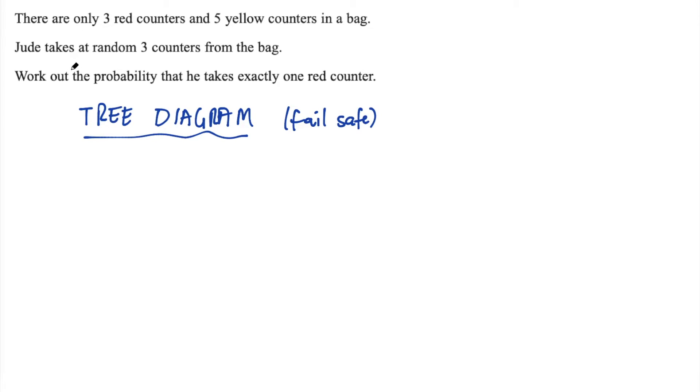Well, you want to look out for how many picks you're required to take. So this is where it says something like takes at random three counters from the bag. That means we're going to have three sections of the tree diagram. Then look out for how many things you're picking from. So in this case, we've got red counters and yellow counters.